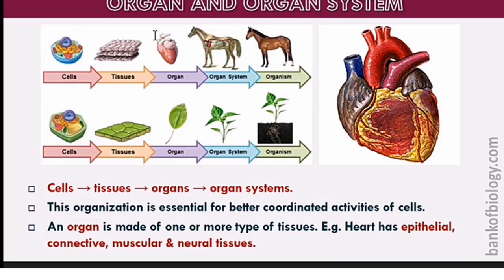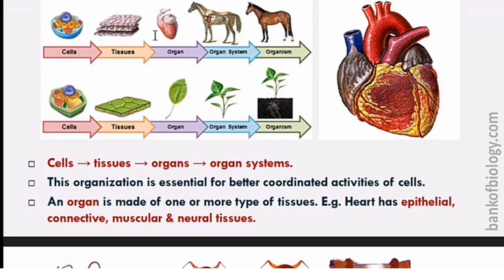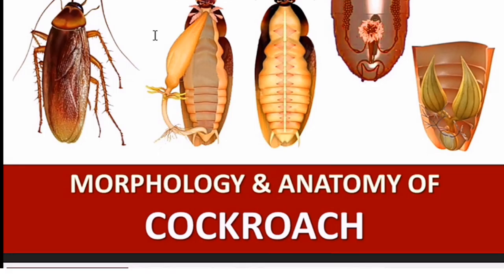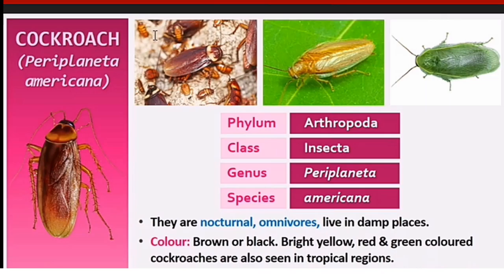Now, organ and organ systems. Cells become tissues, tissues form organs, and organs form organ systems. This organization is essential for better coordinated activities — without it, we could have disabilities. Coordination among cells, tissues, organs, and organ systems is very important. An organ is made up of more than one type of tissue; for example, the heart contains epithelial, connective, muscular, and neural tissues.